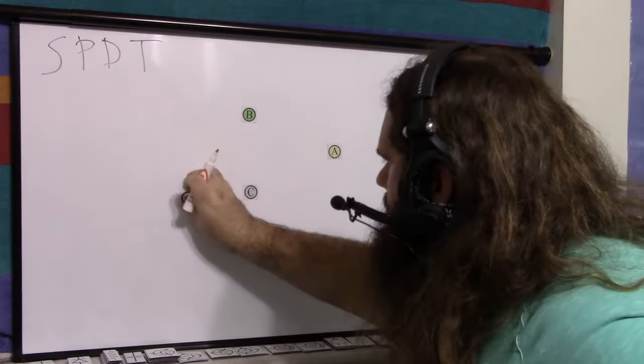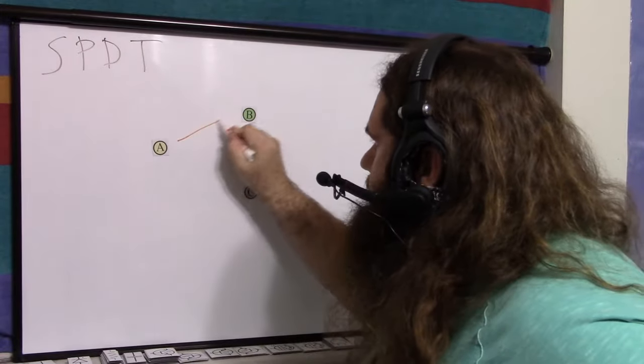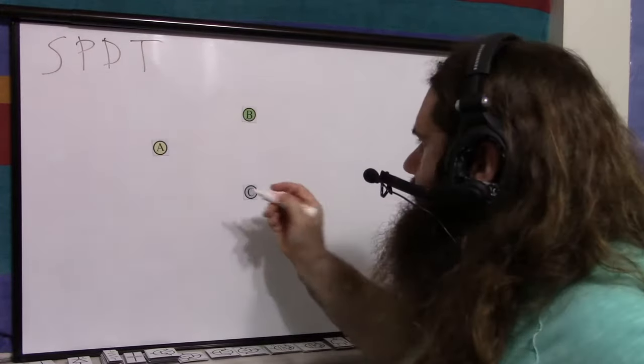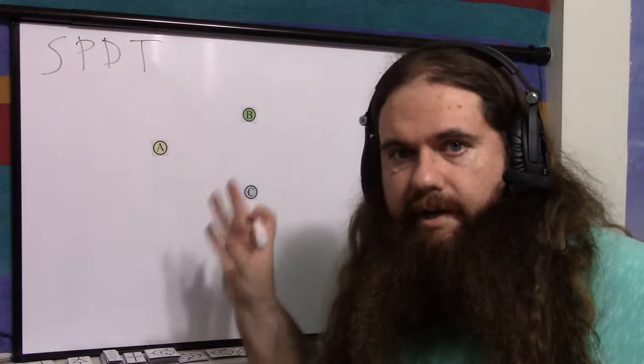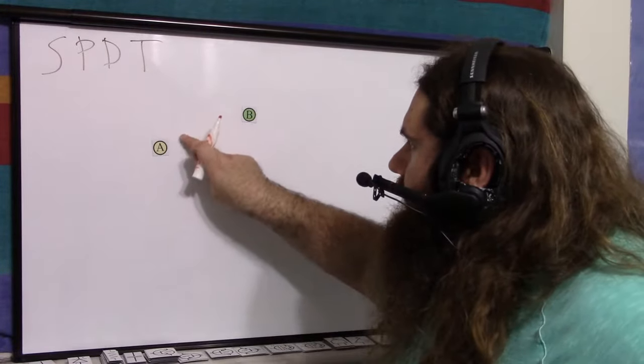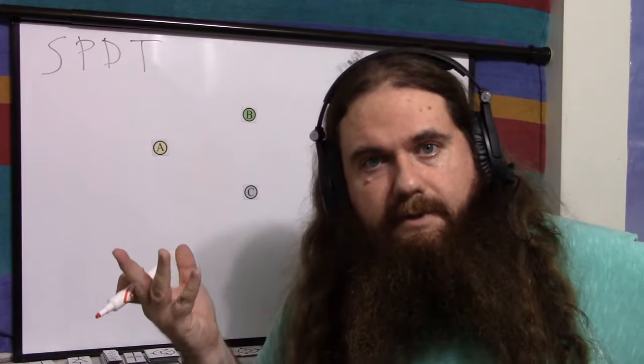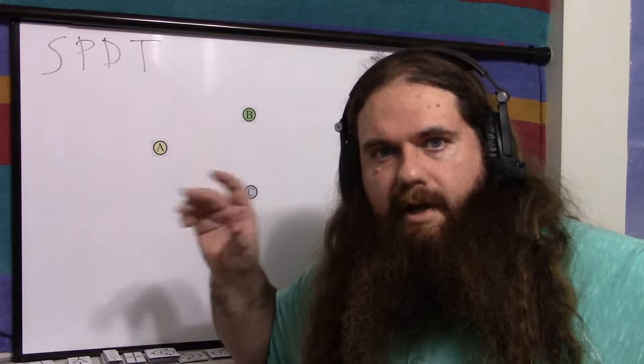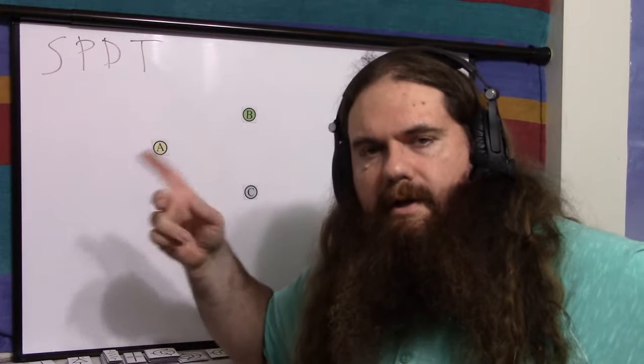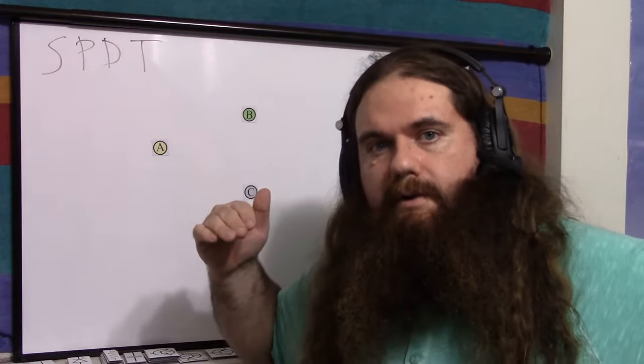What about an on-off-on SPDT? That has three positions. It has this position, just like before. It has this position, just like before. And it has this position, with neither of them connected. So you could have an active connection, an active connection, or no connection, if that's useful to you. So the on-on variety cannot ever have no connection. The on-off-on is the same as the on-on, but it can also have no connection.